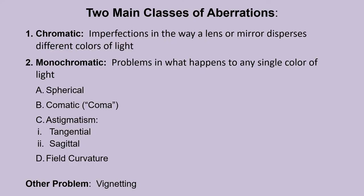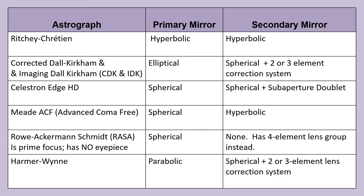It is possible and common to have more than one type of aberration occurring at once, or you can have star smudging due to guiding errors or other photographer-based errors. This makes diagnosing problems in astrophotos hard. Now let's look at a few astrograph designs. There are many to choose from. This is not an exhaustive list, but we're focusing on designs with price tags closer to the reach of amateur astrophotographers. All astrographs seek to eliminate all major optical aberrations.